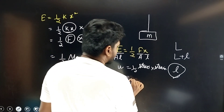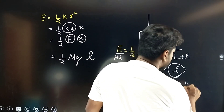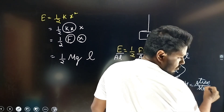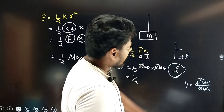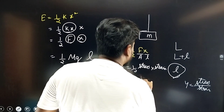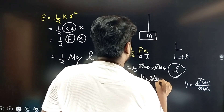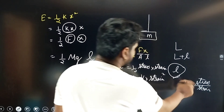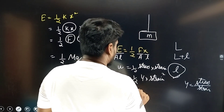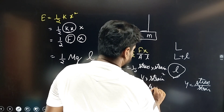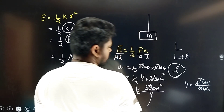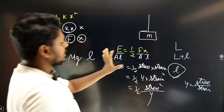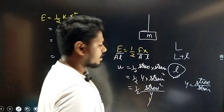Y (Young's modulus) is defined using stress and strain. The energy density formula can also be written using Young's modulus. If you use this formula for energy density, this is the formula that is applied.